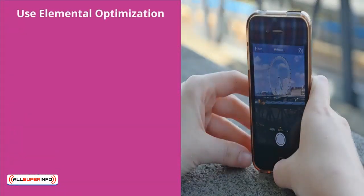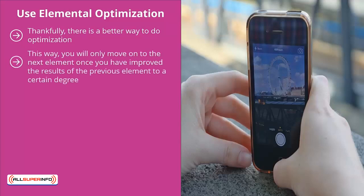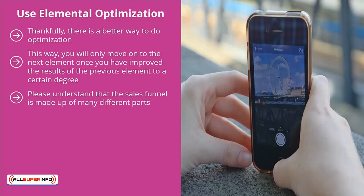Thankfully, there is a better way to do optimization — you can use elemental optimization. Instead of just taking random guesses as to what would turbocharge the results of your sales funnel, you break up each part of the sales funnel process into elements and you make changes on an element-to-element basis. This way, you will only move on to the next element once you have improved the results of the previous element to a certain degree. Once you're happy with those improvements, then you move on to the next element, and then the next element after that.